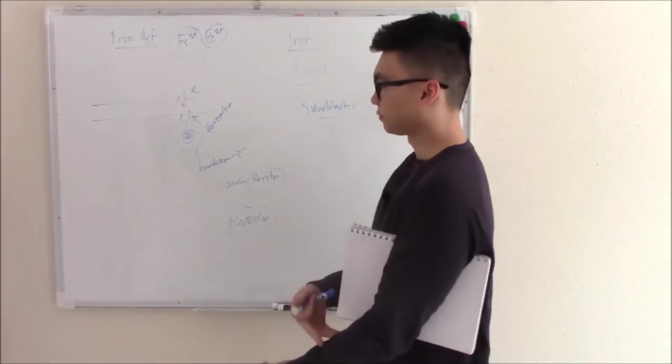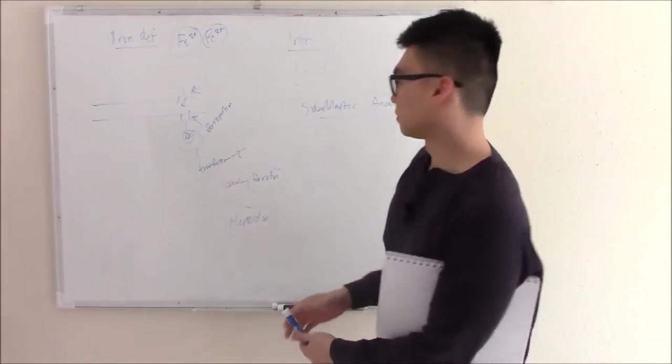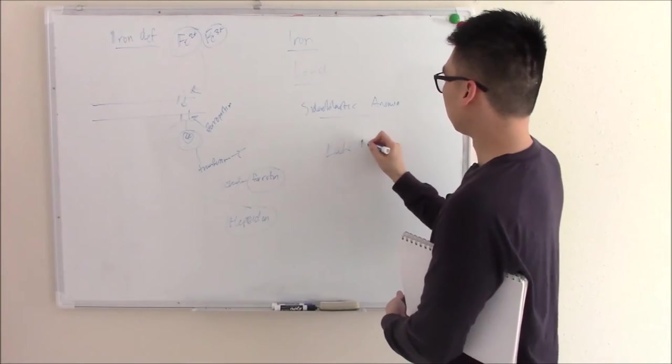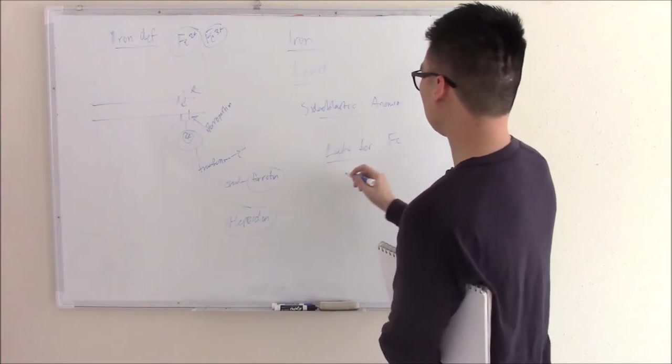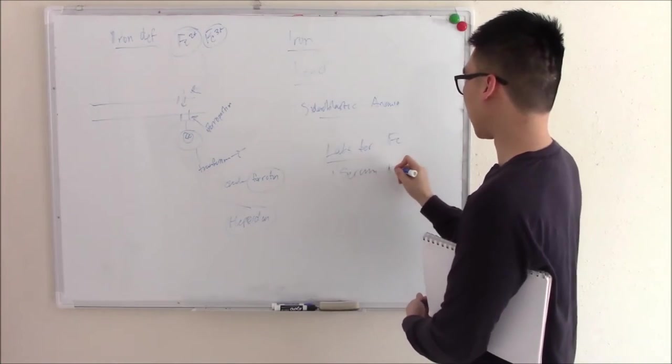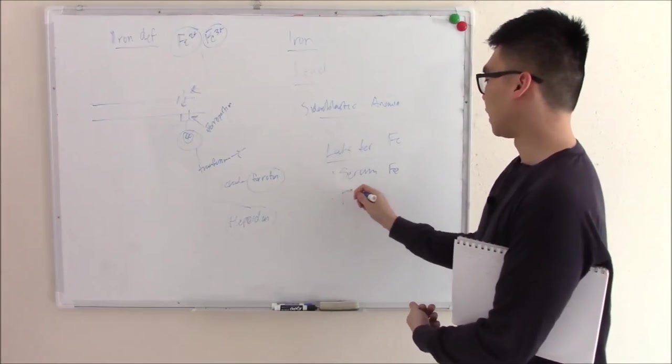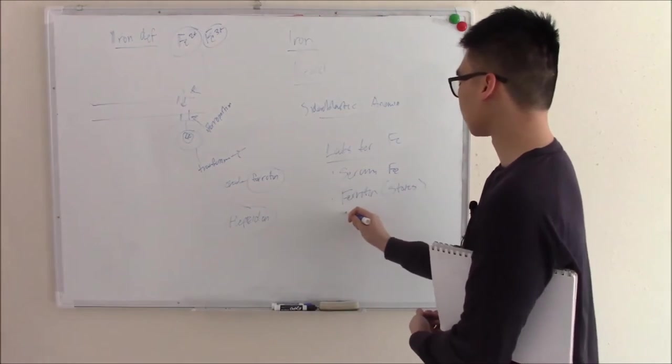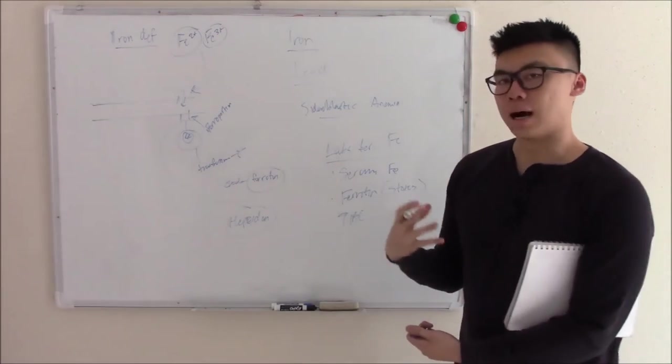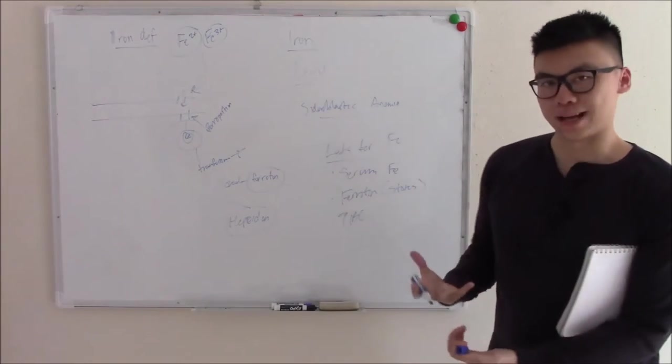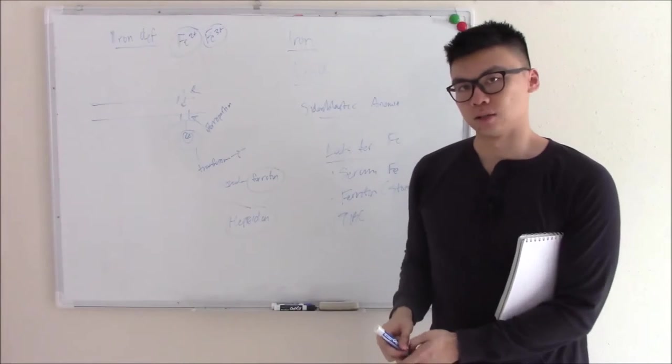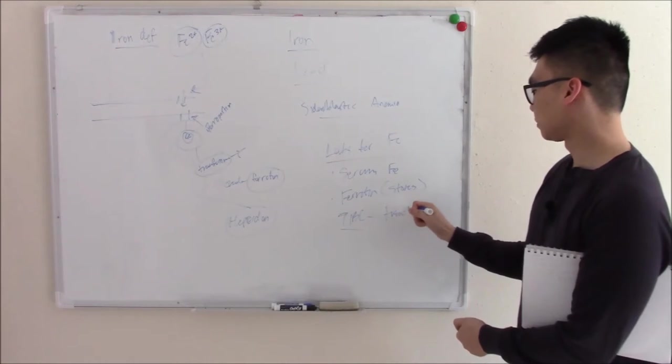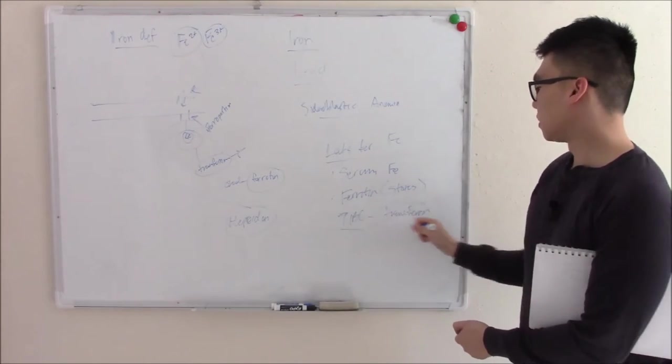Now we can draw blood and see how all of these are functioning. We can see the level of iron in our blood. So I'll just write labs for iron. We can check serum iron. That's just the iron in our blood. We can check ferritin. That's our iron stores. And lastly, we can check something called TIBC or total iron binding capacity. What the heck is total iron binding capacity? What binds iron in your blood? That would be transferrin, right? So TIBC is basically a measure of transferrin.